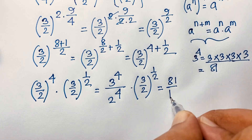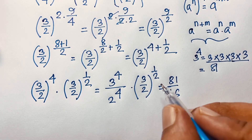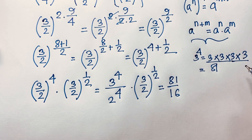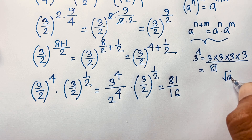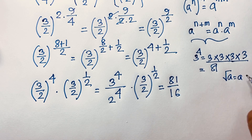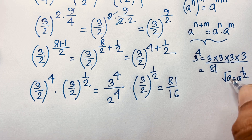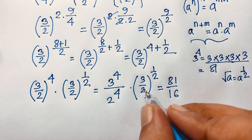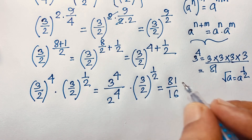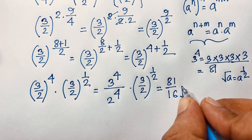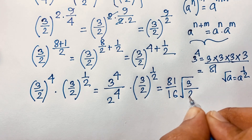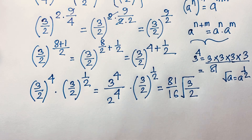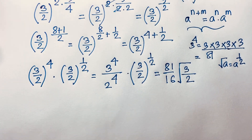And for the second part, note that a to the power 1/2 equals the square root of a. So (3/2) whole to the power 1/2 equals square root of 3 over square root of 2. So we are finding 81/16 times √3/√2.